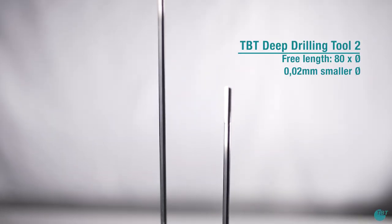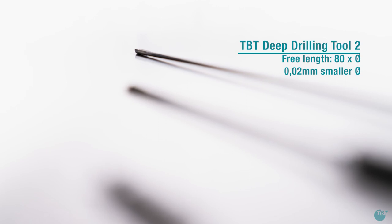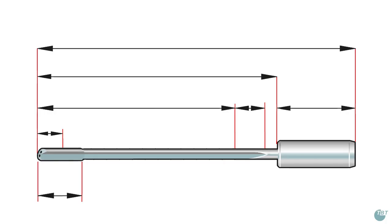The second tool is guided by the drill hole of the first tool. This allows the follow-up tool an additional length of 40 times D. Therefore, this deep hole drill can have a free length of a maximum of 80 times D. Additionally, the follow-up tool should always be 0.02 millimeters smaller in diameter than the previously used tool to secure smooth entrance.